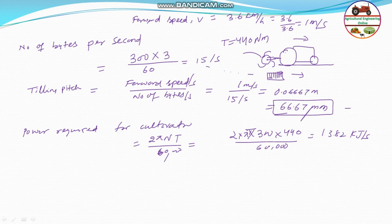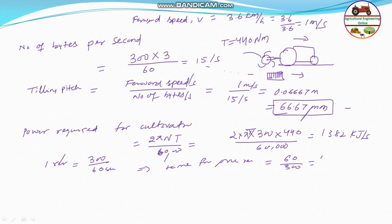Now, one revolution takes how much time? Since there are 300 revolutions per 60 seconds, the time for one revolution equals 60 divided by 300, which is 1/5 second or 0.2 second. That is the time required for one revolution of the cultivator.